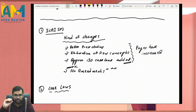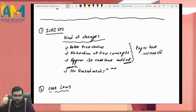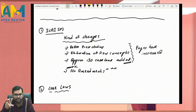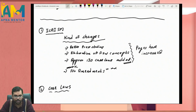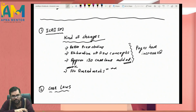Regarding the ICAI study material, the changes in the new edition compared to the old one are as follows. First, many changes involve the same content presented in a better format — for instance, content previously in paragraph form is now in tabular form, and subsection numbering has been added. Some new charts have been included, and a few concepts that were covered in four to five lines have now been elaborated to one or one and a half pages.